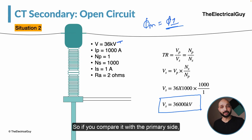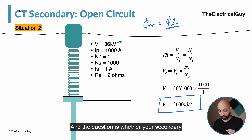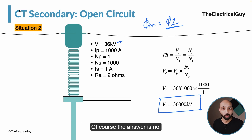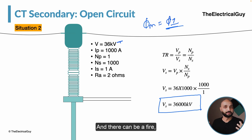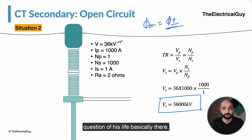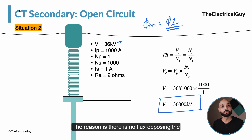The question is whether the secondary of the current transformer is designed to handle this huge voltage. Of course the answer is no. This huge voltage puts enormous pressure on the insulation of the secondary, which will eventually fail. There can be a fire, there can be a big blast, and if somebody is working near it, there is a serious risk to life. The reason is there is no flux opposing the flux produced by i1.